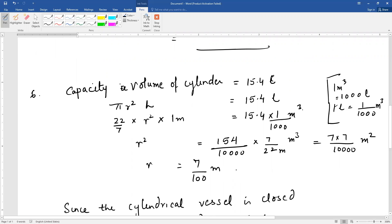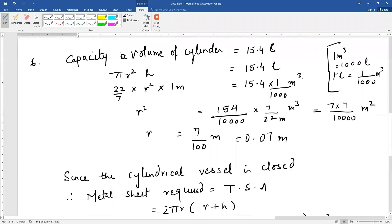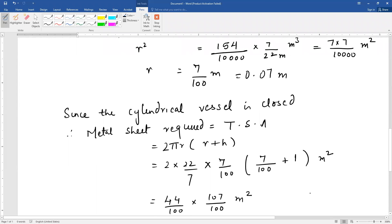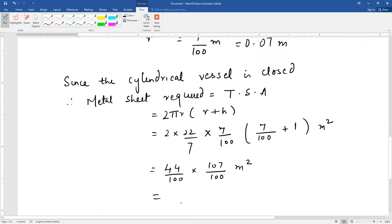Since the vessel is closed, the metal sheet required is the total surface area: 2πr(r+h). Substituting values: 2 × 22/7 × 7/100 × (7/100 + 1). The answer will be in meter square. You can complete this calculation yourself. I hope both questions' concepts are clear to you. If you have any problems, you can ask me. Thank you.